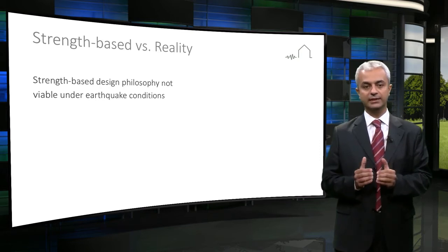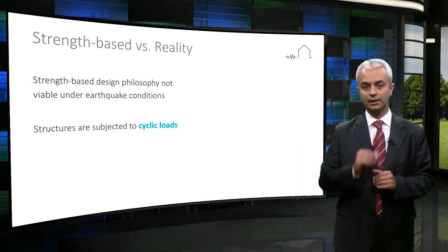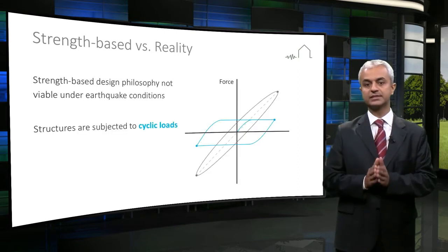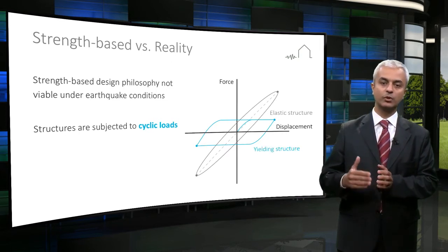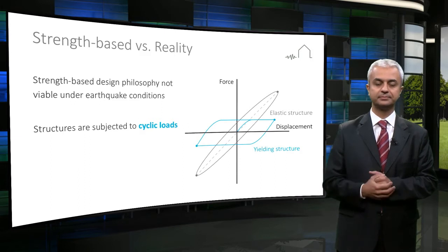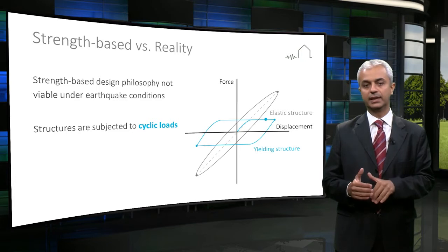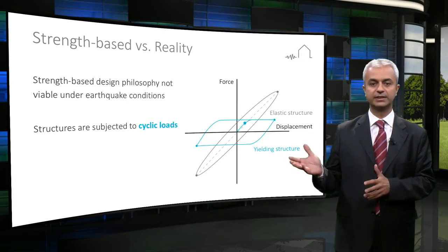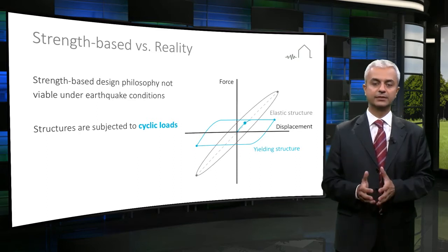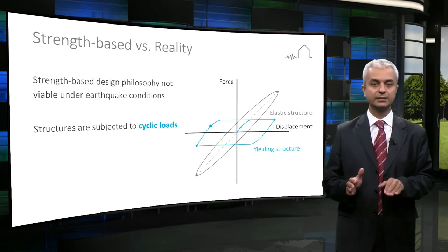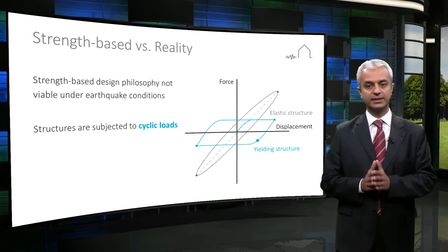An earthquake is a random and unpredictable event with a certain duration. During strong earthquakes, structures are subjected to cyclic loading, and the behavior of the structure is mostly beyond the elastic range. This means that inelastic behavior is inevitable, as can be seen in the animation in this graph. It shows that the ability of accommodating inelastic deformations without failure is very critical in seismic design. This ability is called ductility.